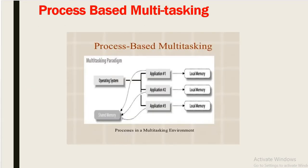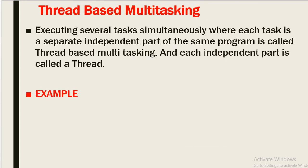An example of process-based multi-tasking is: while typing a Java program in the editor, we can listen to MP3 audio songs, and at the same time we can download a file from the internet. All these tasks are independent of each other and execute simultaneously, so this is process-based multi-tasking. This type of multi-tasking is best suitable at the OS level.